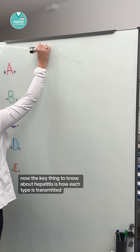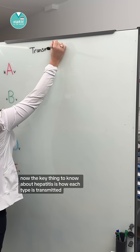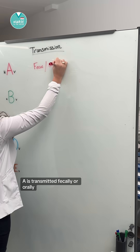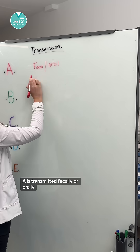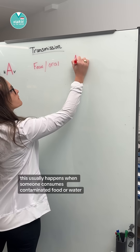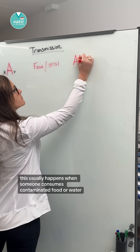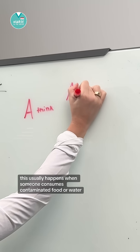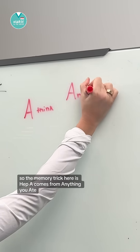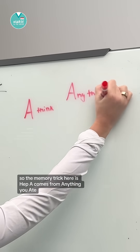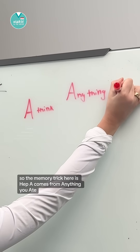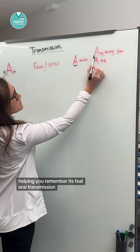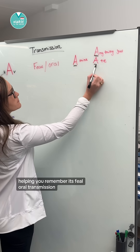The key thing to know about hepatitis is how each type is transmitted. Hep A is transmitted fecally or orally. This usually happens when someone consumes contaminated food or water. The memory trick here is hep A comes from anything you ate, helping you remember its fecal-oral transmission.